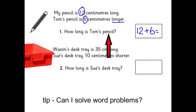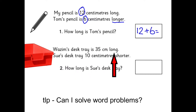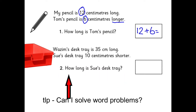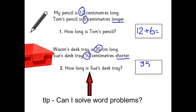I'm not going to give you the answers, but to start with I'm going to show you what maths you need to use. Wazim's desk tray is 35 centimetres long. Sue's desk tray is 10 centimetres shorter. How long is Sue's tray? The numbers are 35 and 10, but this time it's 'shorter', so that means it's a take away: 35 take away 10. See if you can have a go at writing those in your book and solving them.